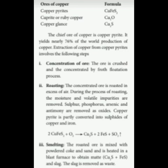The important ores of copper are copper pyrite, cuprite, and copper glance. Copper pyrite has the formula CuFeS₂, cuprite is Cu₂O, and copper glance is Cu₂S. In all three ores, copper is present as a sulfide, as an oxide, and also as Cu₂S. Comparing these three ores, copper is found in enormous amounts in copper pyrite ore.